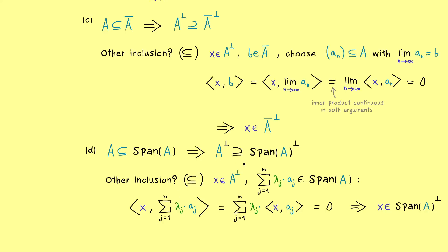This formula explains why we usually talk about orthogonal complements of subspaces. Moreover, all these formulas help us when we want to form the orthogonal complement twice in a row — but what comes out there I want to show you in the next video. I really hope we meet there again, and have a nice day. Bye bye.